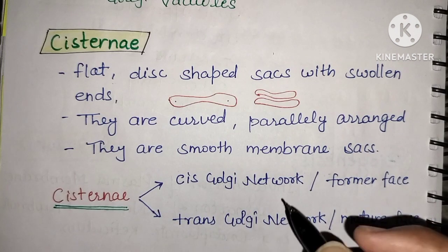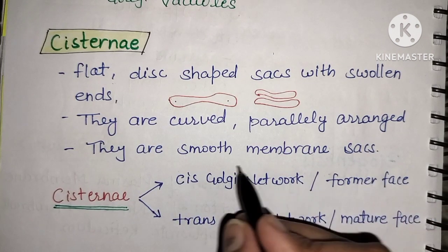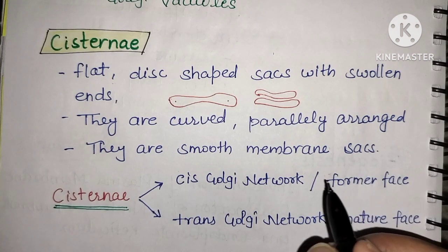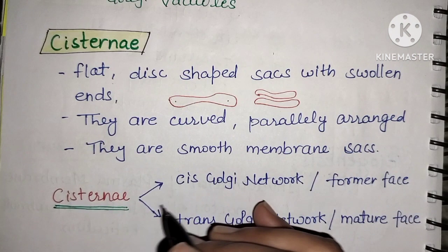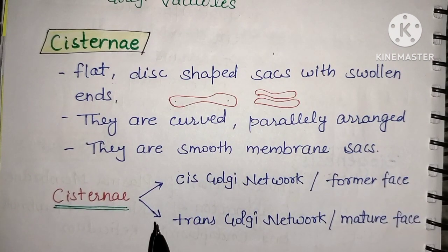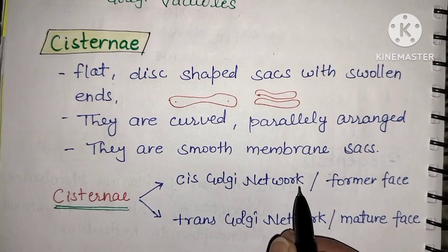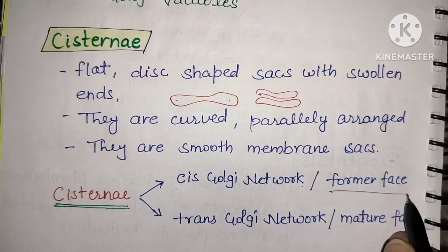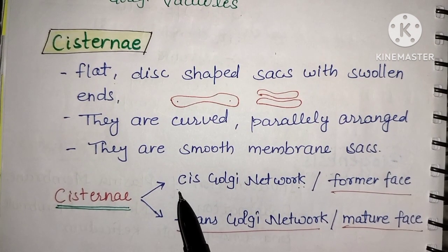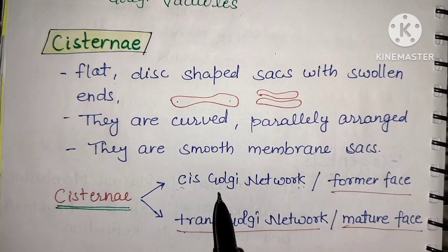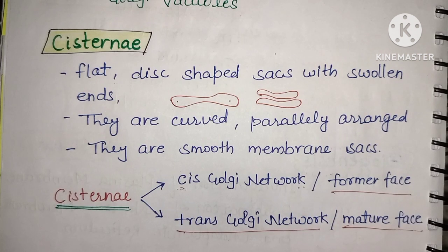The Golgi apparatus has smooth membrane sacs, unlike the rough endoplasmic reticulum which has ribosomes. There are two types of cisternae networks: the cis-Golgi network, called the former face, and the trans-Golgi network, called the mature face. The cis face receives vesicles from the endoplasmic reticulum, which are then further modified.